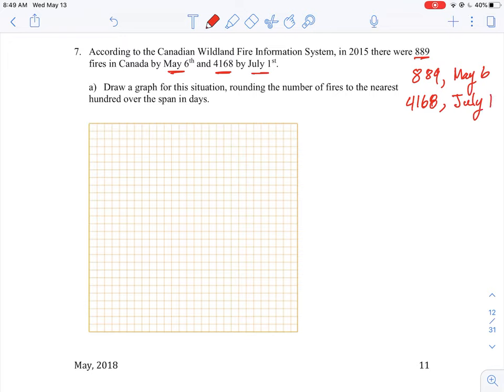Now draw a graph for the situation, rounding the number of fires to the nearest hundred. So that lets us take a number like 889 and make it into 900 over the span in days. So they've given us dates, but they haven't given us number of days. So that's what we're looking to plot here.